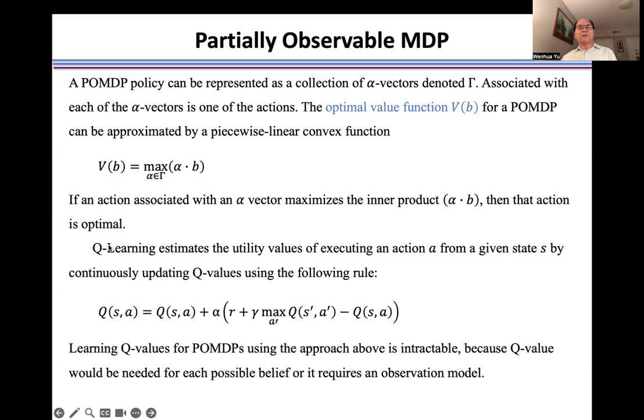Usually we use Q-learning to estimate the Q-value at state s and action a from the current value and temporal difference error. However, in a partially observable Markov decision process, we need the Q-value at each possible belief, which is not possible. This requires an observation model and is only feasible for lower dimensional problems.